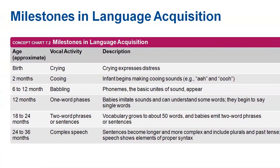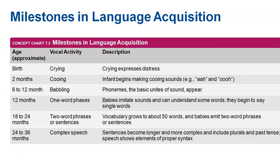Now let's look at some milestones in language acquisition. It should be noted that this is not set in stone — if your child takes a little longer, that doesn't mean something is wrong. These are just rough guidelines. The very first acquisition really is crying, where a baby learns that if they don't like something, they make a noise about it, and eventually they get what they want. In a sense, that is a form of communication — it's a language.